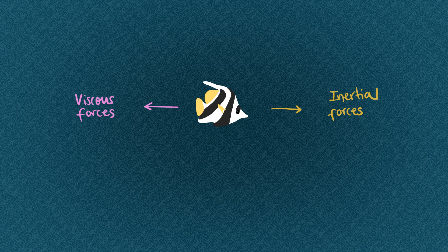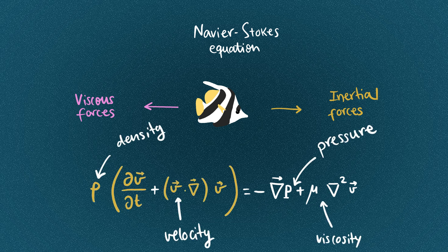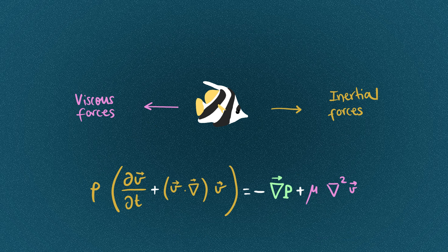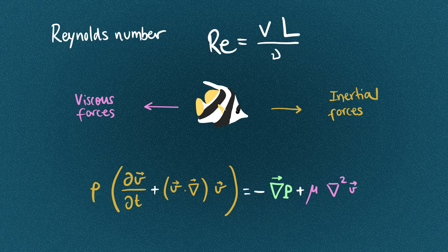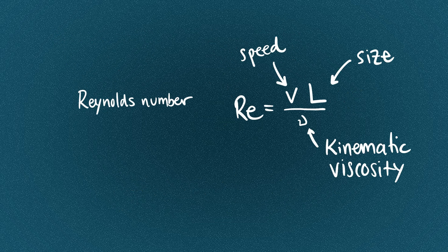Physicists describe this competition by the Navier-Stokes equation, where the left-hand side represents inertial forces and the right-hand side represents viscous forces. From this equation we can define the so-called Reynolds number, which directly compares the two types of forces. The Reynolds number depends on the swimmer's size, speed, and the fluid's viscosity.